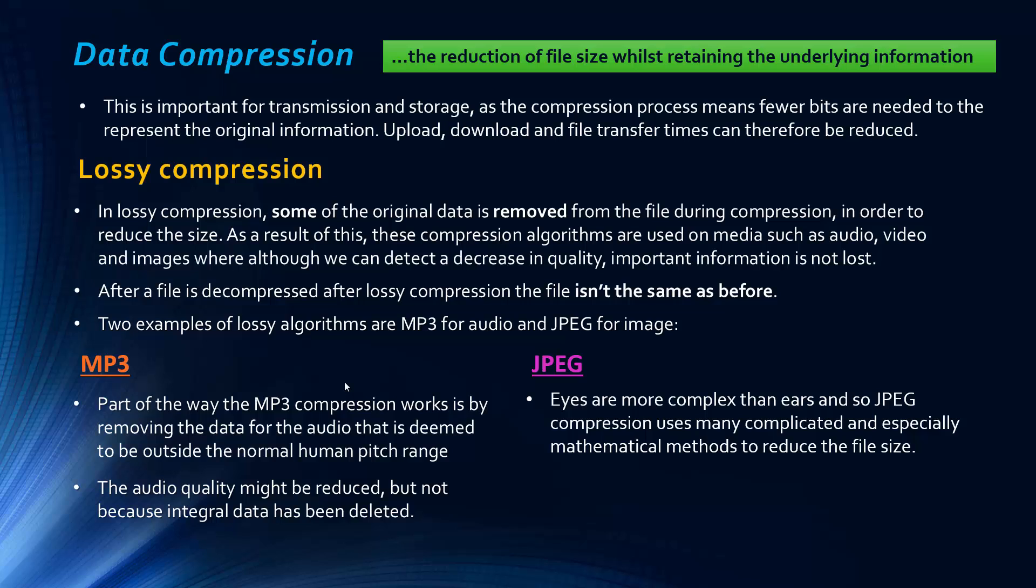Humans can only hear sounds in a certain range, and presumably audio files have data in them that is beyond this range, so it just gets rid of this. This might mean the audio quality is reduced, but not because we've deleted the data that's integral. The JPEG, because of the fact that the eyes are more complex than ears, this is quite a complicated algorithm, so I'm not going to go into details and you don't need to know details. But an easy one to understand is that the eyes aren't as sensitive to certain colours. It gets rid of bits of colour that aren't really picked up by humans. That would be an example of data you'd get rid of.